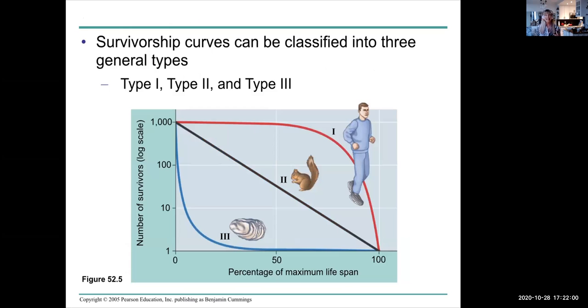These are different kinds of survivorship curves, classified into three general types: Type I, Type II, and Type III. Humans belong in the Type I survivorship curve in that survival is high up into the age of about 80, and then survival tends to decline. So high survivorship early on in life and less later on.